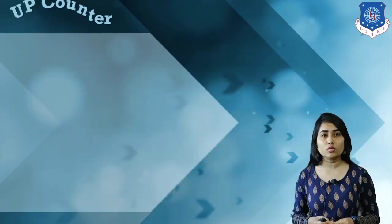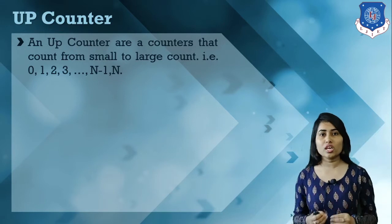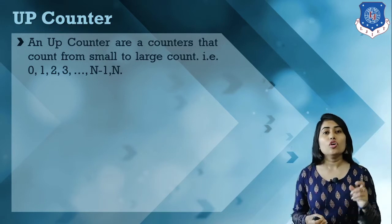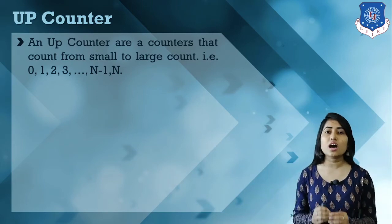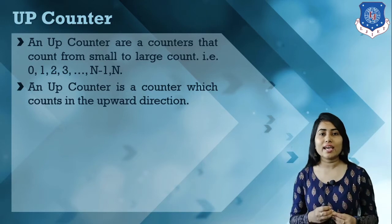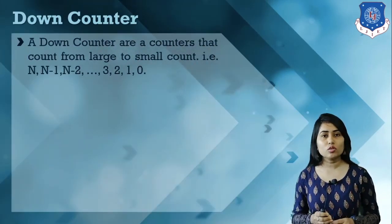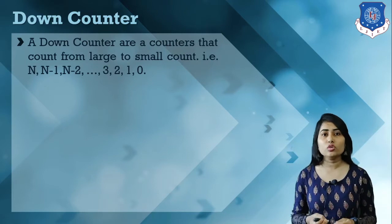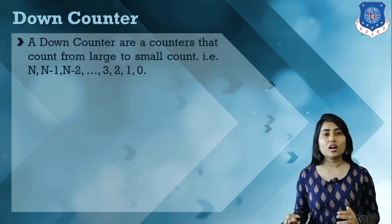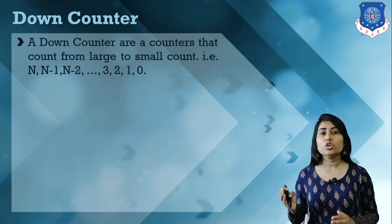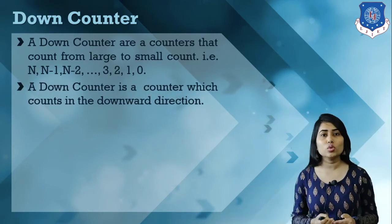Next we have the up counter, which counts values from small to large: 0, 1, 2, 3, up to n. It counts in an upward direction, which is why it's called an up counter. The down counter counts values from large to small — for example, n, n-1, n-2, down to 2, 1, 0 — counting in a downward direction.